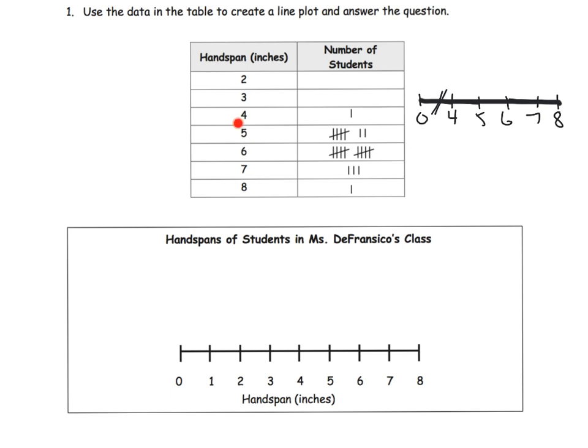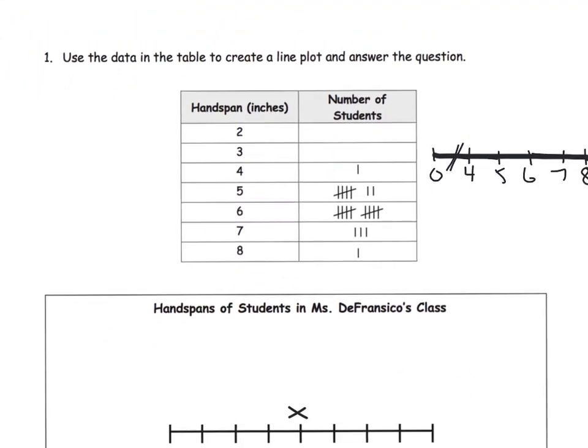Now we're going to make our X's. One person has a four-inch hand span, so we put one X. Then seven people have a five-inch hand span. Parents and teachers, give your students a moment to count and identify shortcuts. For example, when counting tallies, we don't want students to count each individual tally — we want them to recognize a group of five plus two as seven, or say five-six-seven. Talk about efficient shortcuts for counting tallies.